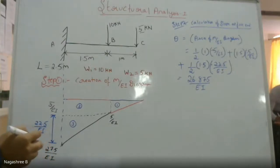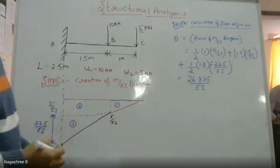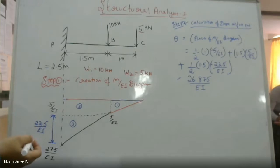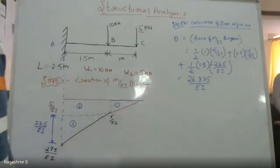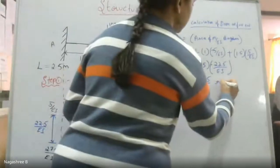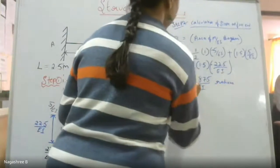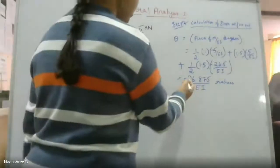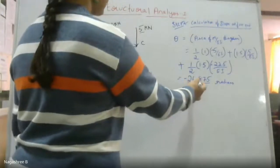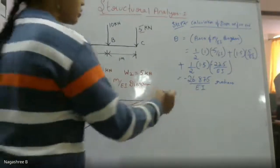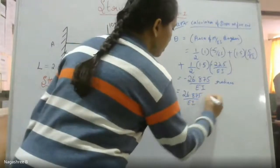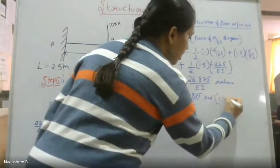The value I have obtained is 26.875 by EI. The equation does not mention the value of EI; if it is provided, substitute the flexural rigidity value and simplify. This slope is always in terms of radians, and can also be expressed as 26.875 by EI radians in the clockwise direction.